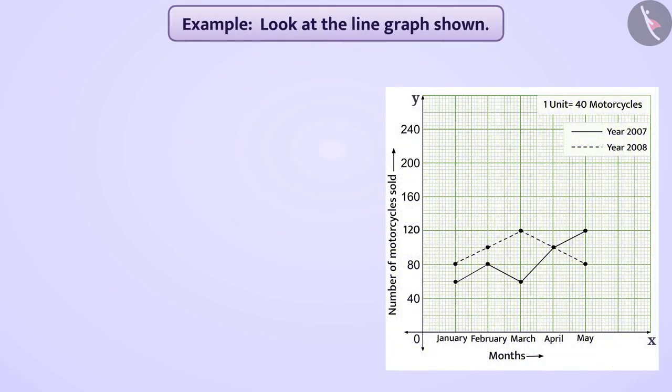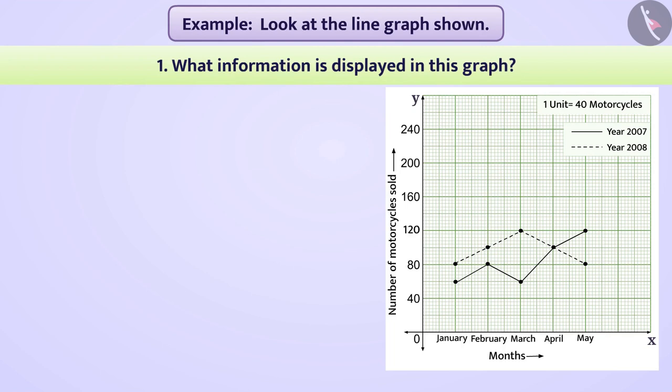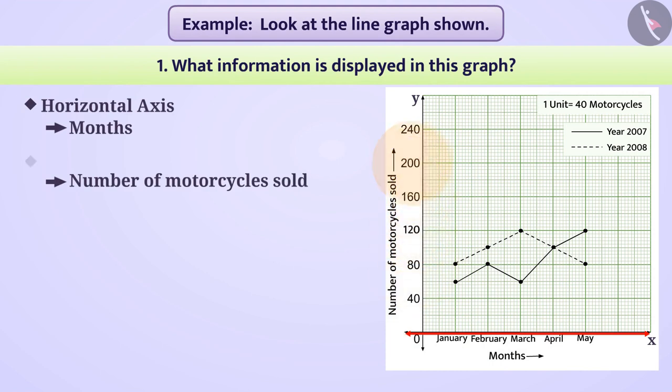Look at the line graph shown. What information is displayed in this graph? The graph shows the months on the horizontal axis and the number of motorcycles sold on the vertical axis.